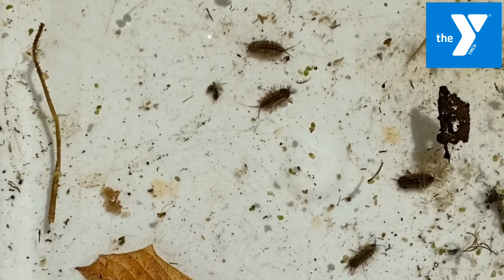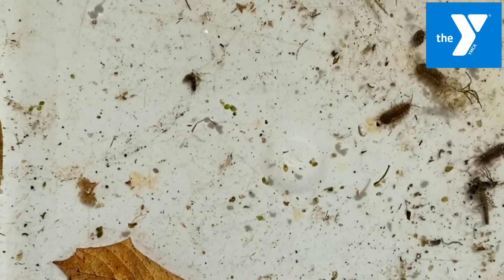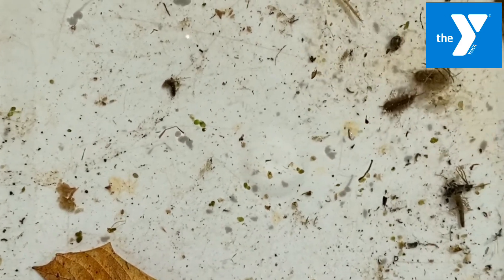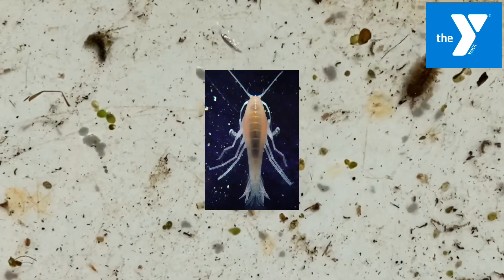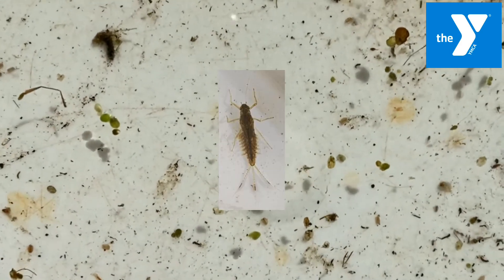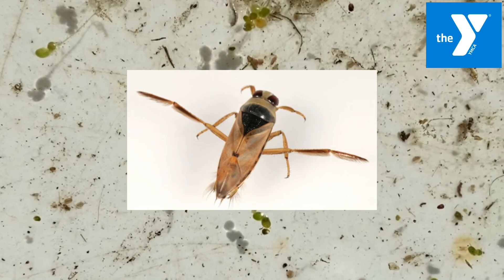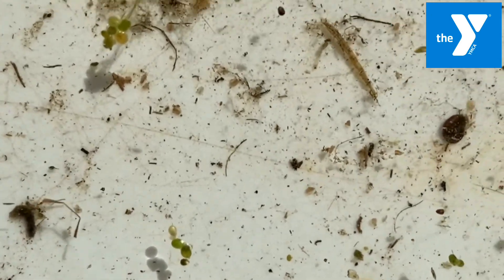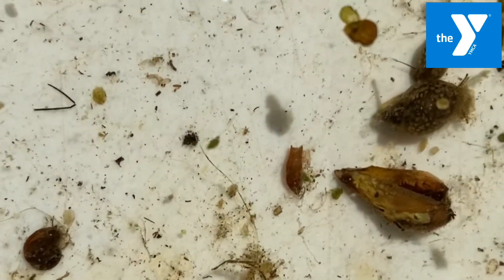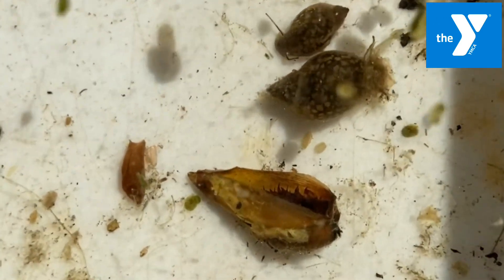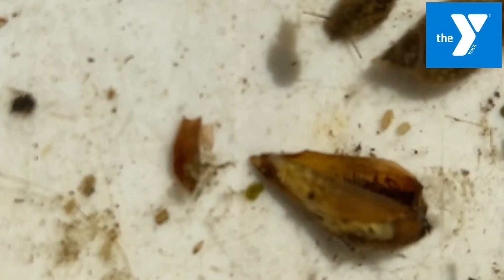A macroinvertebrate is an organism that does not have a backbone. Some examples include snails, scud, dragonfly nymphs, amphipods, mayfly nymphs, midge larvae, and backswimmers. The word macro means big. These organisms, however, are not that big — they're actually very small — but what it means in this case is that we can see them without a microscope.